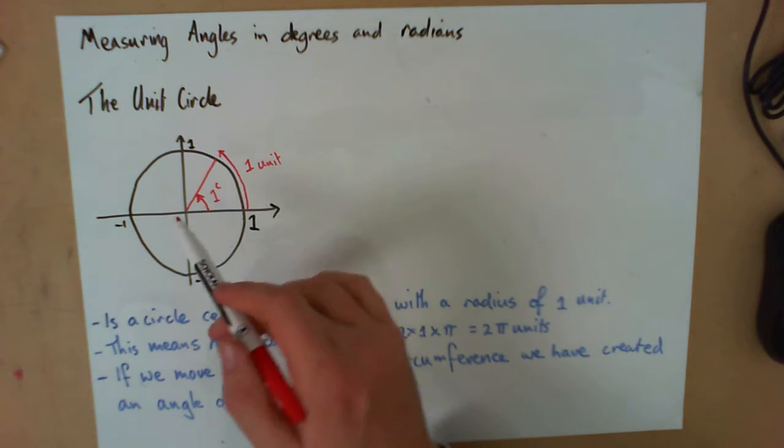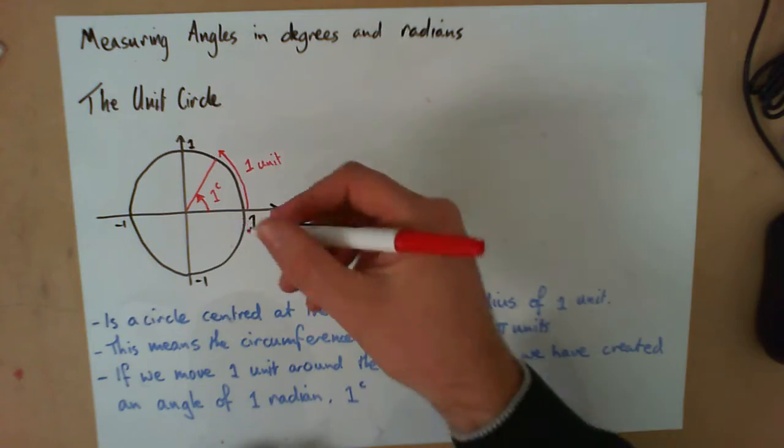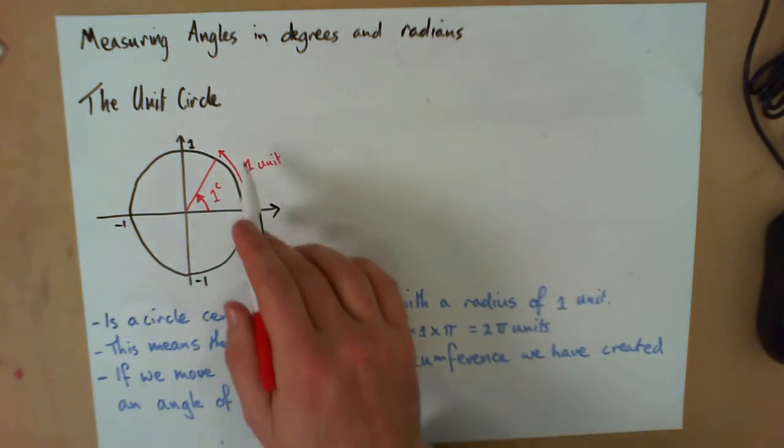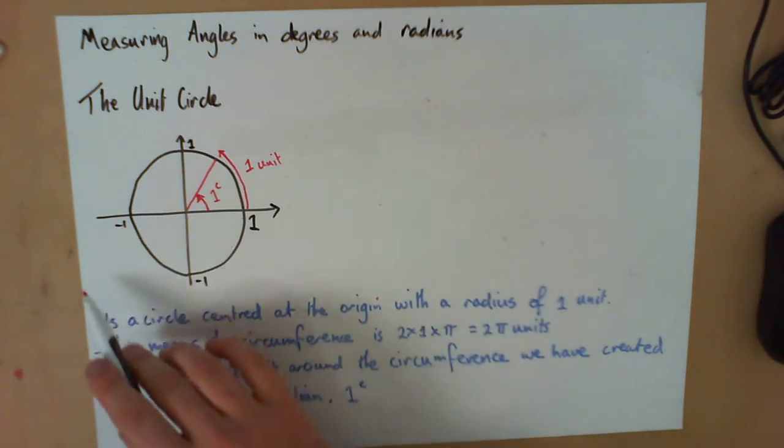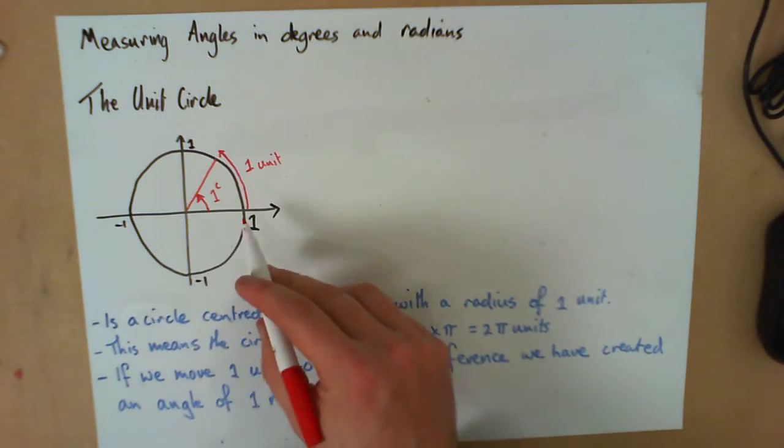If we come around the circle by 1 unit, we create an angle of 1 radian. This is actually described as a positive direction, moving this way anti-clockwise starting at the x-axis. So we measure our units in an anti-clockwise direction.